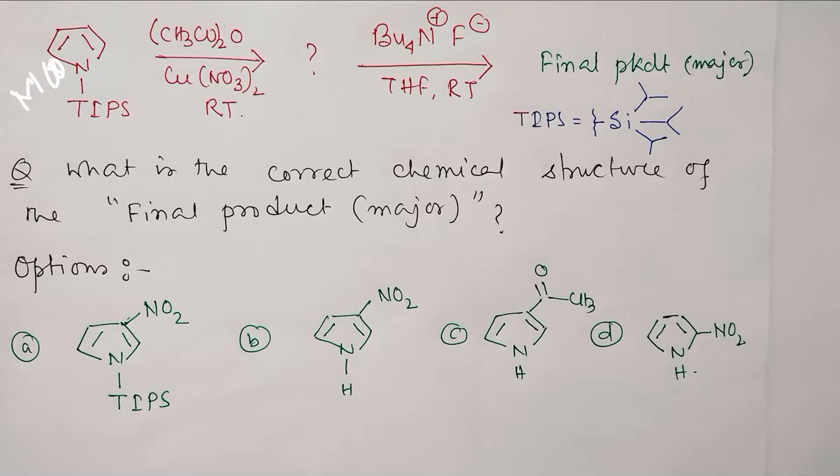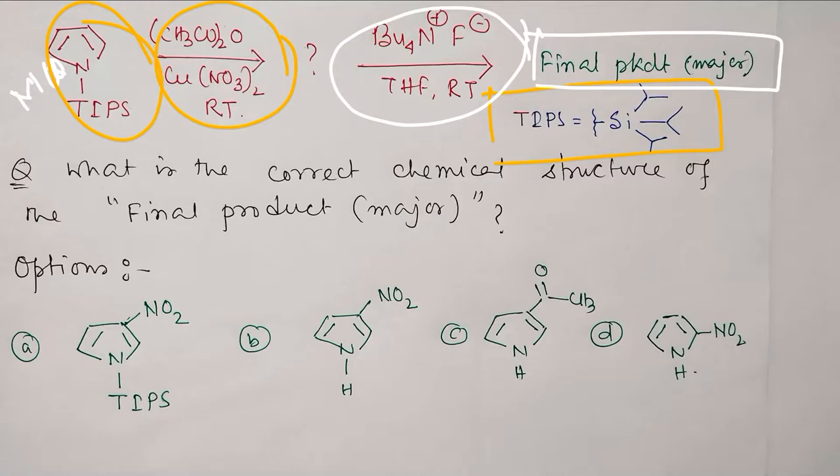Today's question is: nitrogen pyrrole attached with TIPS (a protection group with this structure) reacts first with acetic anhydride and copper nitrate at room temperature, and after that the produced product is further reacted with tetrabutylammonium fluoride in THF at room temperature.